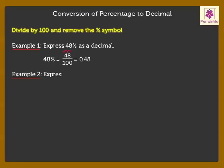Now let's express 0.35% as a decimal. Here, 0.35% is equal to 0.35 upon 100, which is equal to 0.0035.